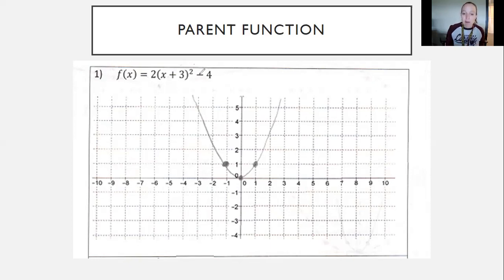We know that a number being added or subtracted on the outside of the parent function moves it up or down. This is minus four so that means we're going to move that vertex down four. Now if I am adding or subtracting a number on the inside of the grouping symbol of a parent function that means I move it left or right. Now in your investigation in our discussion of the notes we figured out that a plus three on the inside really means we are moving to the left.